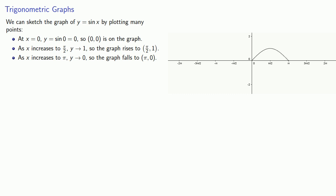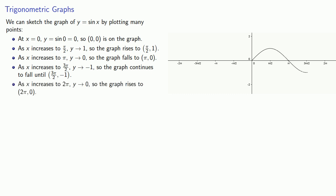As x increases to 3 pi over 2, y goes to negative 1, so the graph continues to fall until (3 pi over 2, negative 1). And as x increases to 2 pi, y goes to 0, and the graph rises to (2 pi, 0). Since sine is a periodic function, the graph repeats, and we end up with duplicates of this fundamental period.